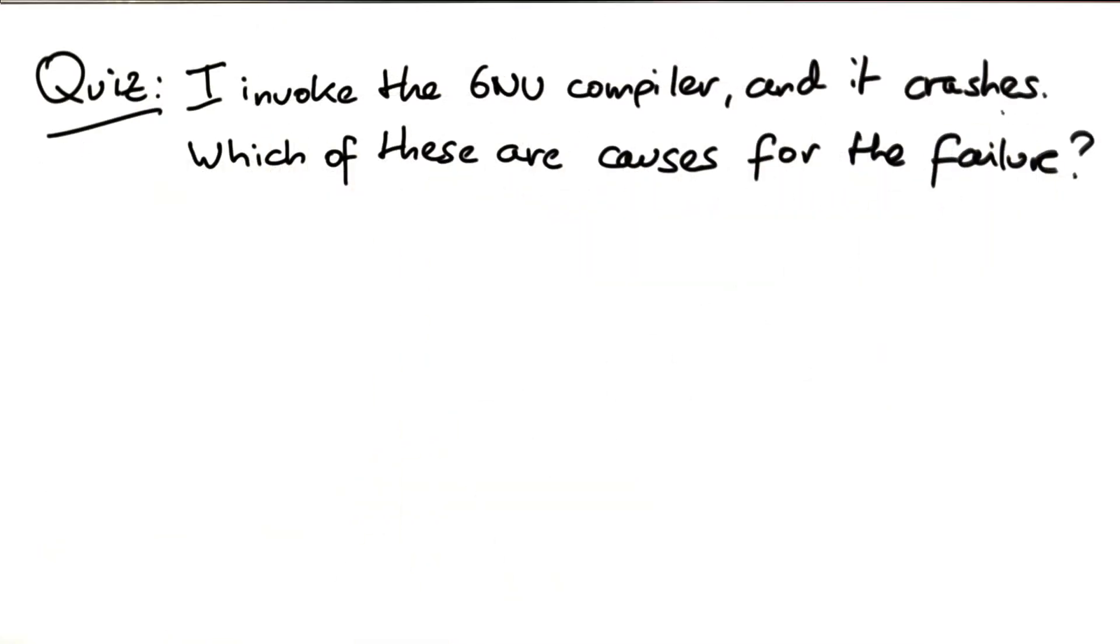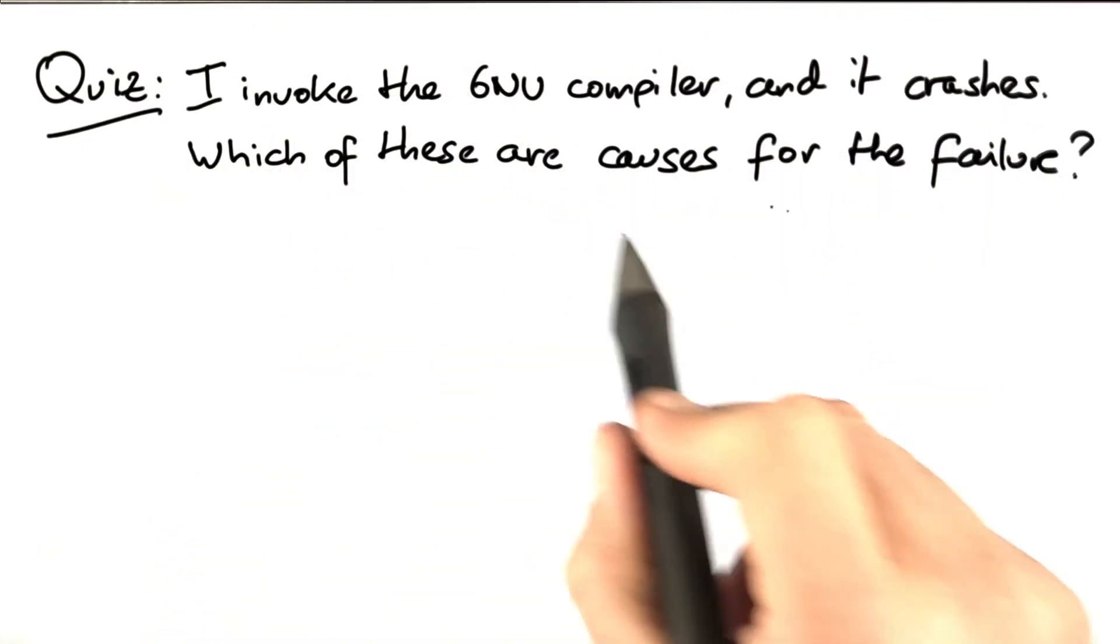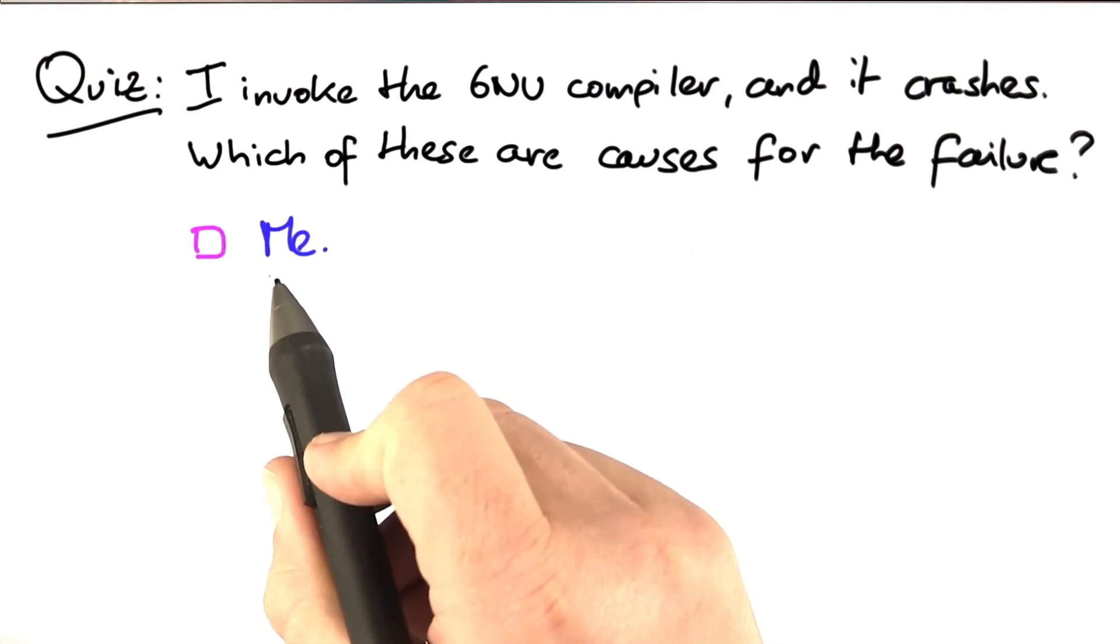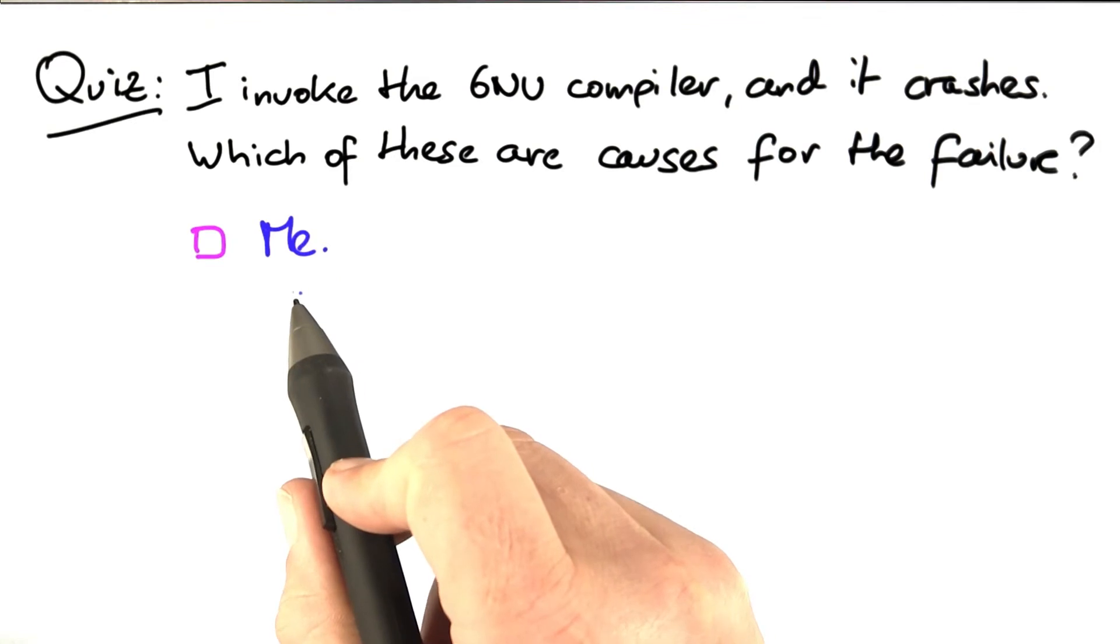Here's a quiz. I invoke the GNU compiler and it crashes. Which of these are general causes for the failure? Is it me, because no me, no invocation, no crash?